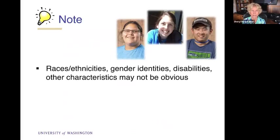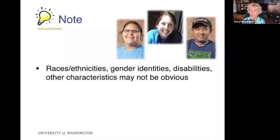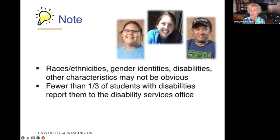Races, ethnicities, gender identities, and disabilities — and other characteristics — may not be obvious. Most disabilities are not obvious. You see students on Zoom, you don't necessarily know if they have a disability. We can't base our teaching practices around knowing if students with disabilities are in the class. Combined with that is the fact that fewer than a third of students with disabilities nationwide report them to the disability services office. Some people are shocked by this.